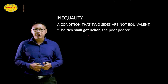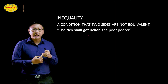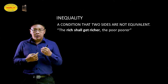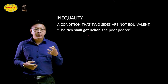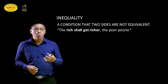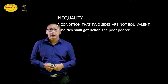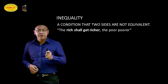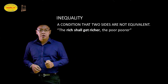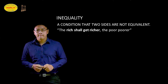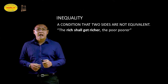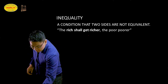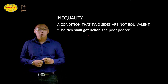According to the dictionary, inequality is a condition where two sides are not equivalent — someone is rich, someone is poor, or someone is smart and someone is not. We will mention one common saying: the rich get richer and the poor get poorer. Why does this happen? I would like to show you a vicious circle to explain this.